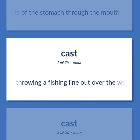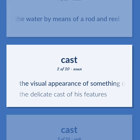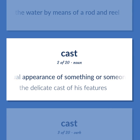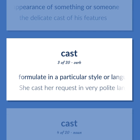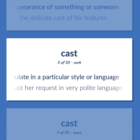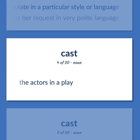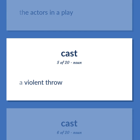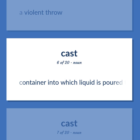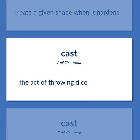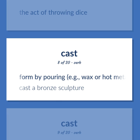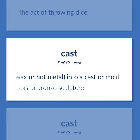Cast: the act of throwing a fishing line out over the water by means of a rod and reel. The visual appearance of something or someone — the delicate cast of his features. Formulate in a particular style or language — she cast her request in very polite language. The actors in a play. A violent throw. Container into which liquid is poured to create a given shape when it hardens. The act of throwing dice. Form by pouring, e.g., wax or hot metal, into a cast or mold — cast a bronze sculpture.